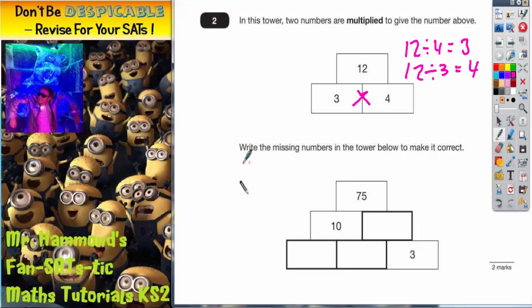The reason why we say that is because on the question that we've got to do, it says write the missing numbers in the tower below. We can't multiply these two together to get this one because we don't know what this one is in the middle of the bottom row. So we're going to have to use these two to help us to get this one.